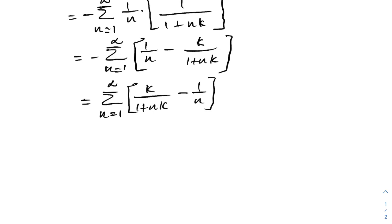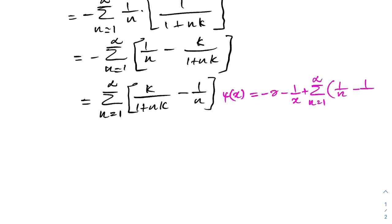To evaluate this infinite series, we recall the digamma function. The digamma of x is equal to minus gamma minus (1/x) plus the infinite sum from n equals 1 to infinity of (1/n minus 1/(x plus n)). We proved this identity in the digamma function video; I will add the link in the description.